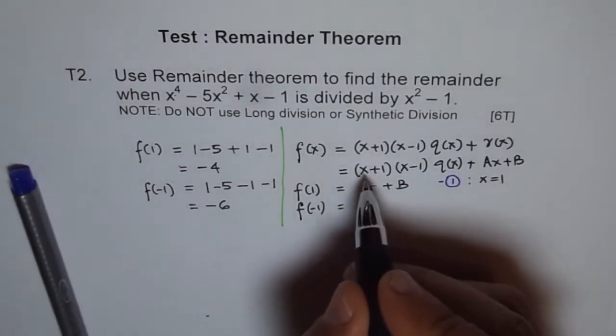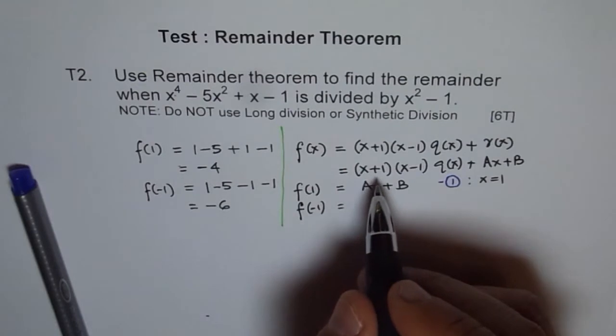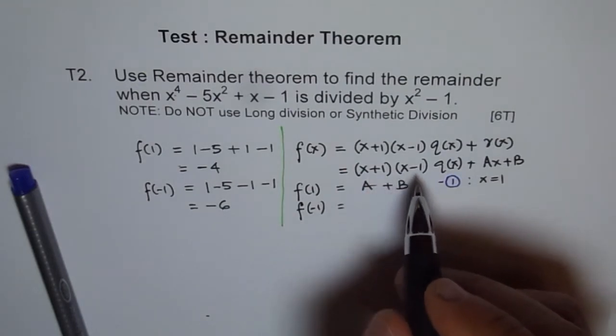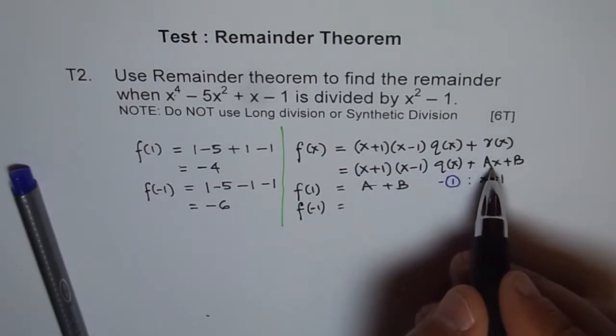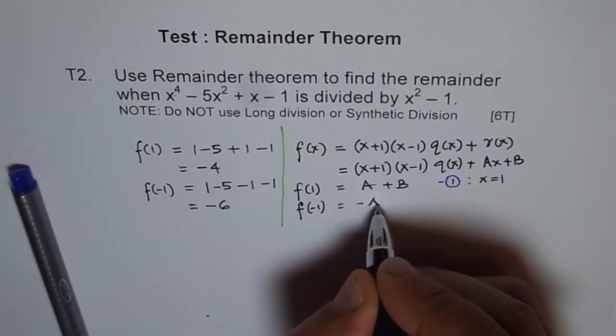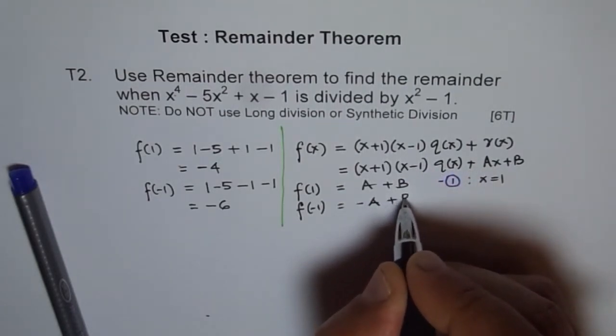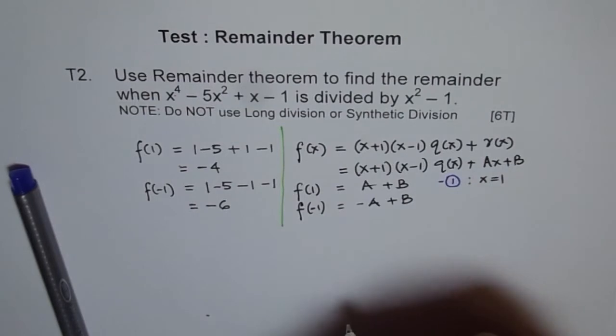What is f of minus 1 equal to? If I put minus 1 here, then I get this is 0 and so I get minus a plus b.